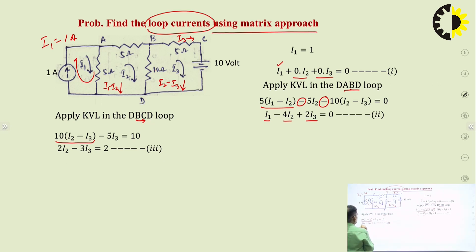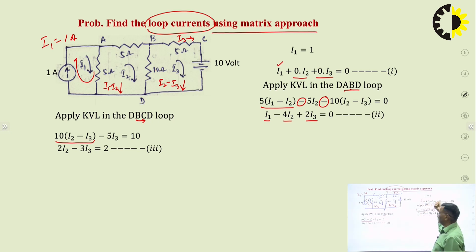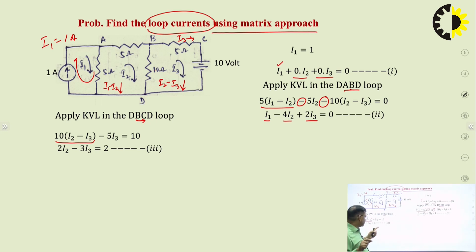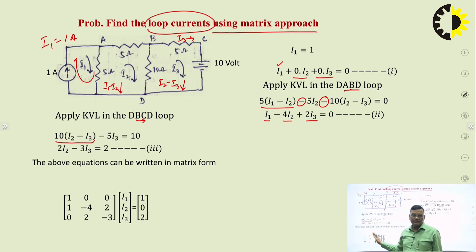We have written 3 linear equations. In the first equation i2 and i3 are absent, so we write i1 + 0·i2 + 0·i3. In the second equation all three loop currents are present. In the third equation only i2 and i3 appear, so we write 0·i1 + 2i2 minus 3i3 = 2. All three linear equations can be written in matrix form.